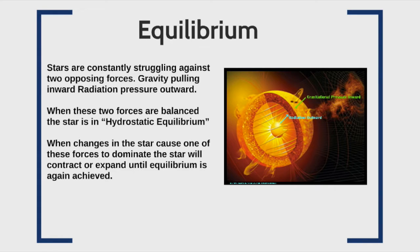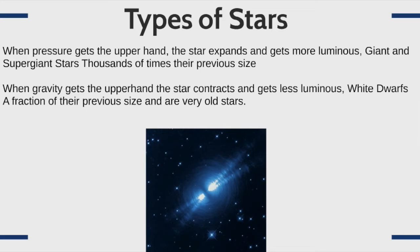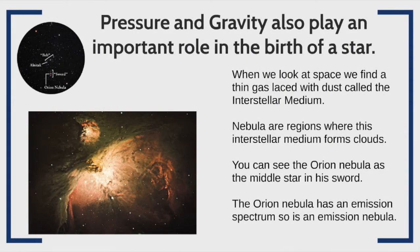Every part of a star's life cycle is a balance between gravitational pressure crushing a star inward and the radiation and thermal pressure supporting against that gravitational crushing. Sometimes one force overcomes the other. When radiation pressure gets the upper hand, typically later in a star's life, the star will expand and become more luminous — giving us giant and supergiant stars that can be thousands of times their previous size. When gravity wins, it crushes the star making it less luminous, which is the fate of white dwarfs and several other smaller objects we see in the sky.